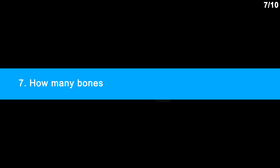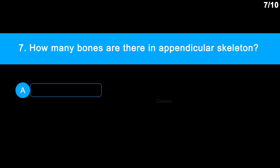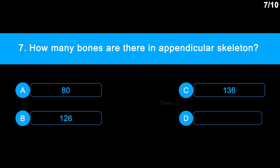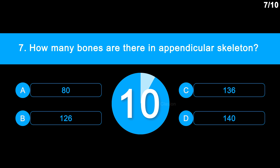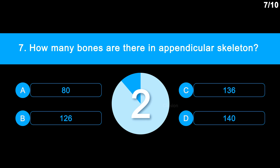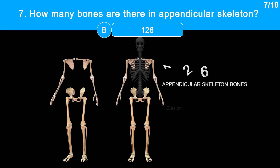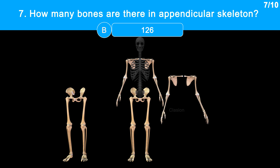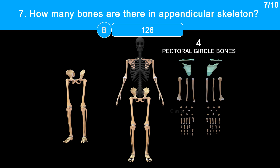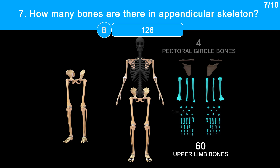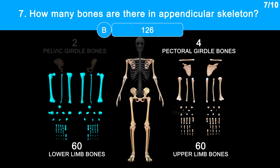Question 7: How many bones are there in the appendicular skeleton? Option A, 80. Option B, 126. Option C, 136. Option D, 146. The correct answer is option B, 126. Let's count them. There are a total of 126 bones in the appendicular skeleton. The human body has two arms and two legs: 4 pectoral girdle bones, 60 upper limb bones, 2 pelvic girdle bones, and 60 lower limb bones.